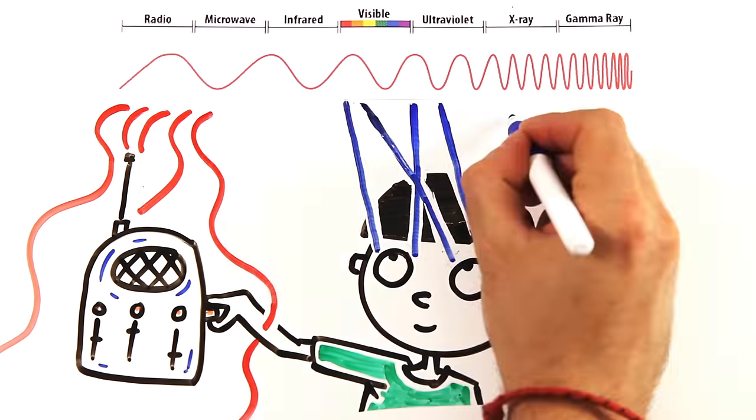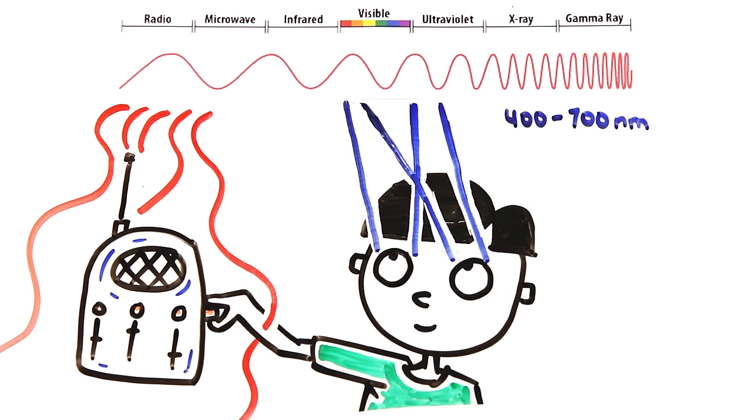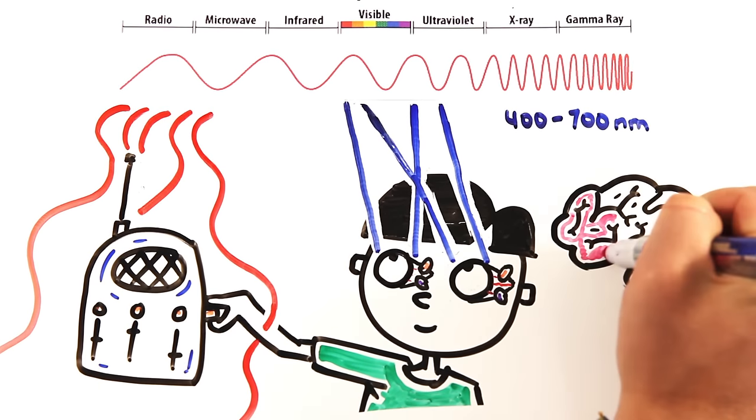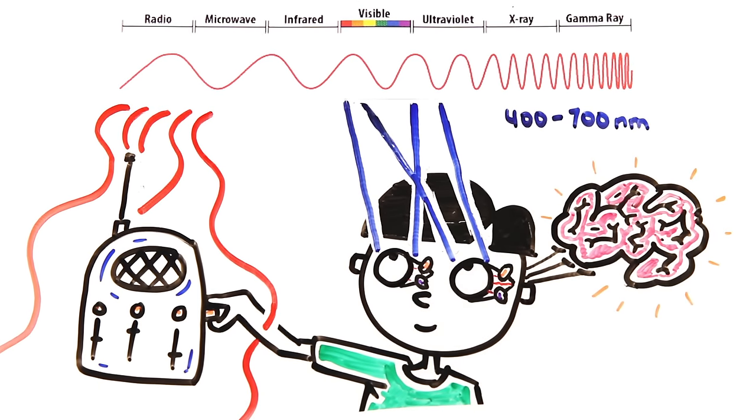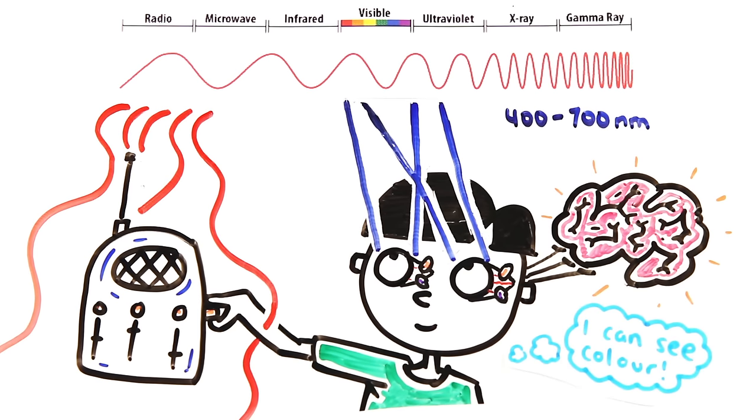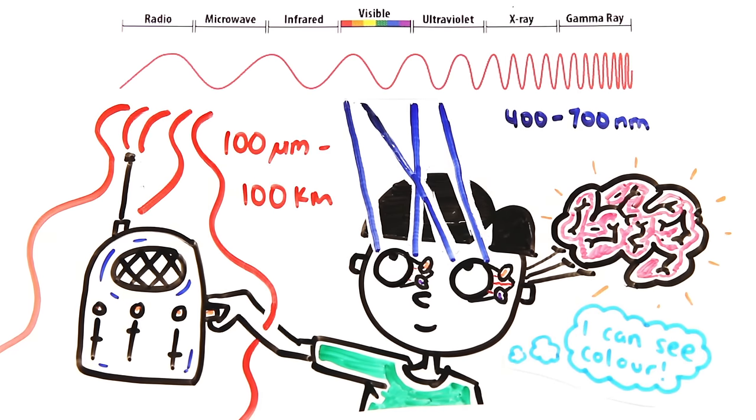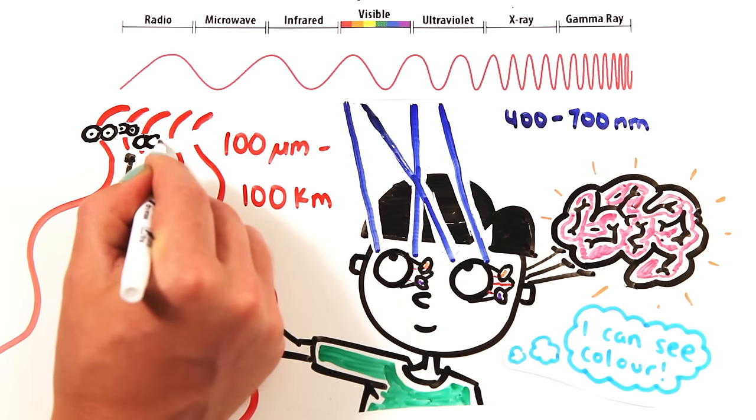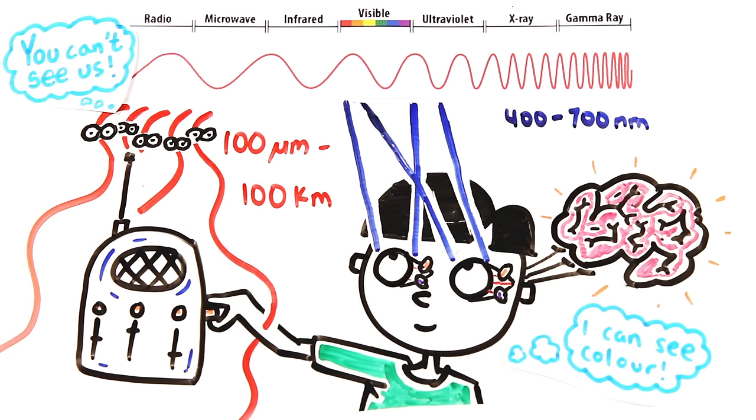Photons with wavelengths between 400 to 700 nanometers have the perfect level of energy to excite the rods and cones in your eyes, which then transmit signals to your brain that you interpret as different colors. But radio waves, which have wavelengths ranging from 100 microns to 100 kilometers, are much lower energy and can't excite your eyes. So they're invisible to us.